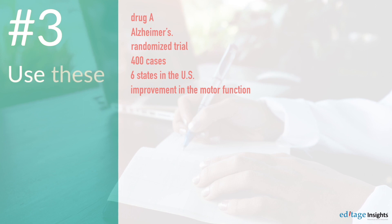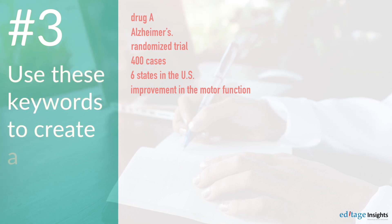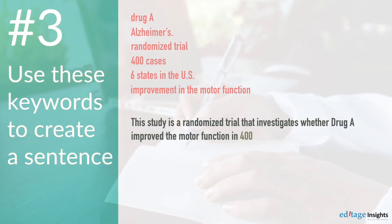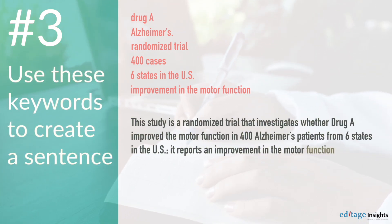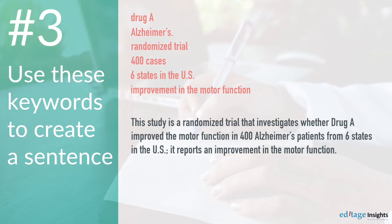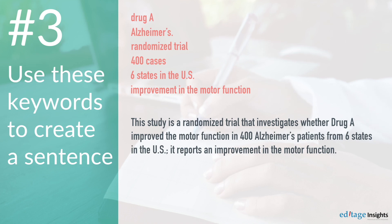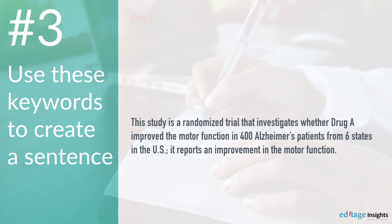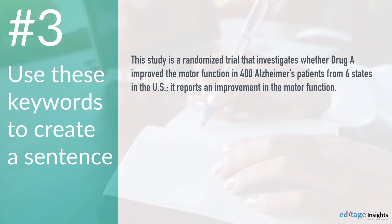Step 3: Use these keywords to create a sentence. This study is a randomized trial that investigates whether Drug A improved the motor function in 400 Alzheimer's patients from 6 states in the U.S. It reports an improvement in the motor function. Don't worry if this sentence is long — you're about to polish it.